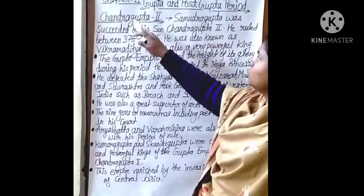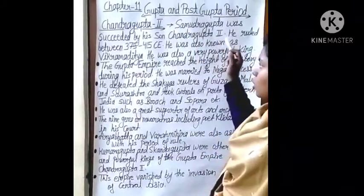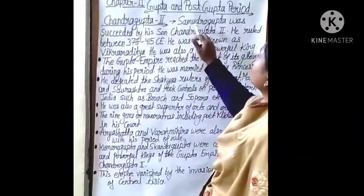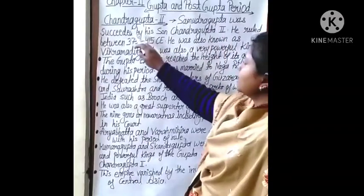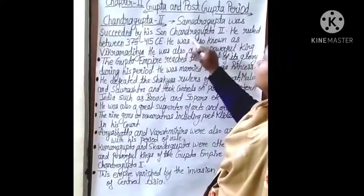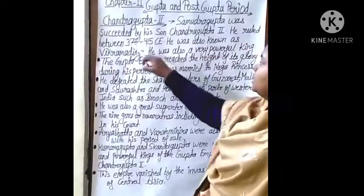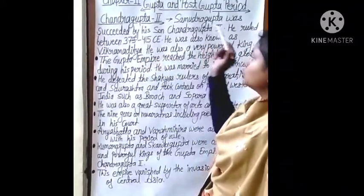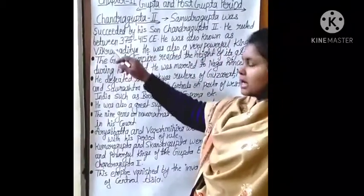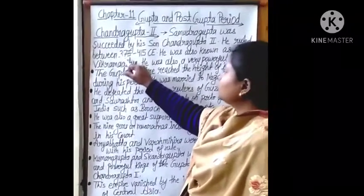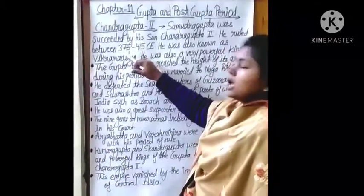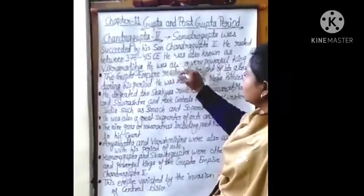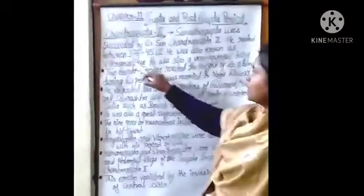Chandragupta 2 was the son of Samudragupta. Samudragupta was succeeded by his son Chandragupta 2, and he ruled between 375 to 415 CE. He was also known as Vikramaditya.